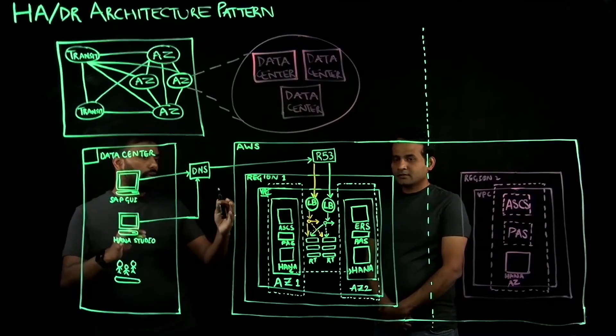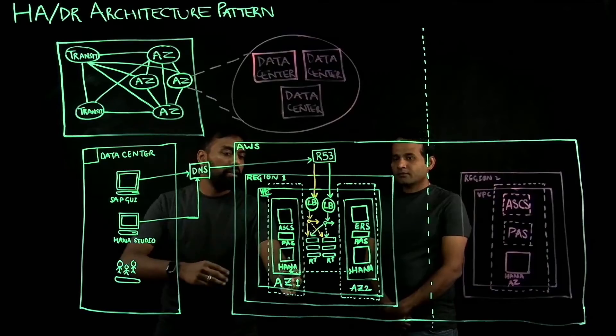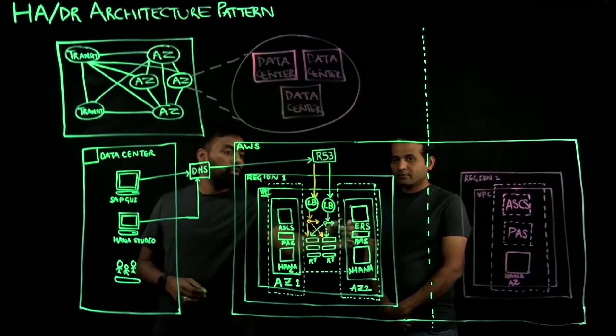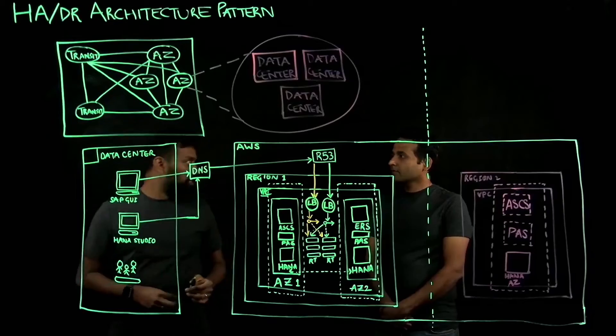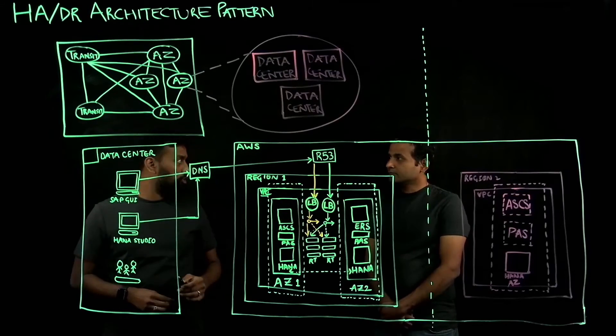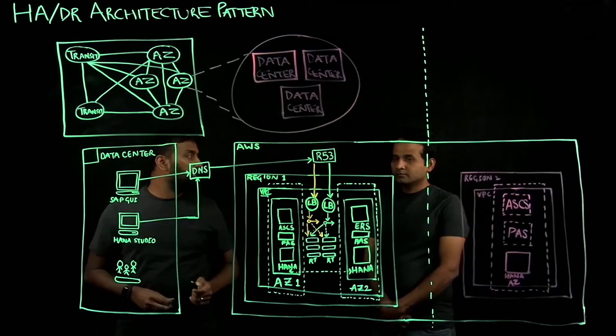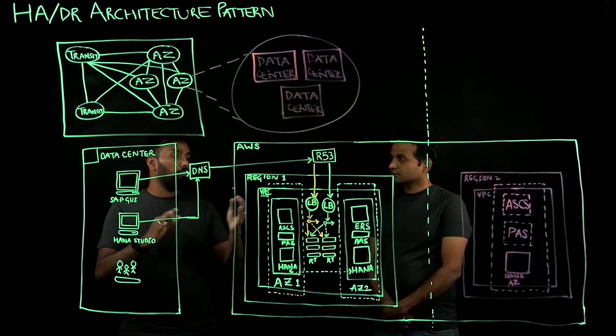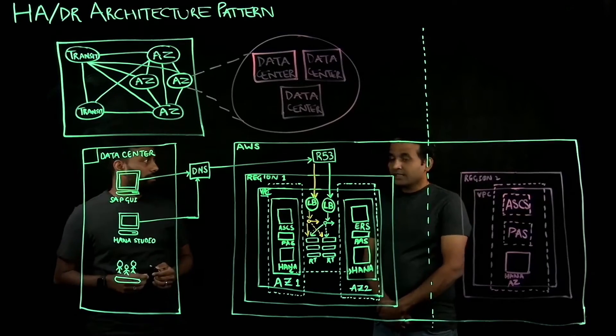So that is how, in case of an event in AZ1, you're still able to fail over to your secondary instances that are available on AZ2 and continue to maintain your connectivity to the system, thereby achieving high availability. Excellent.